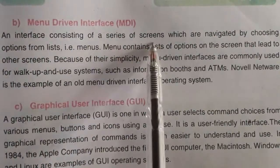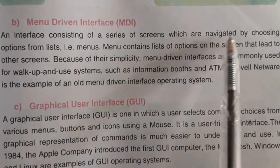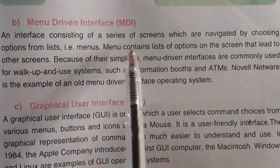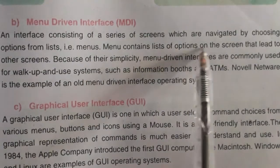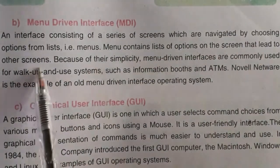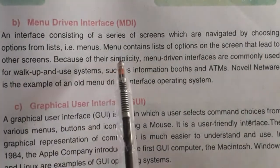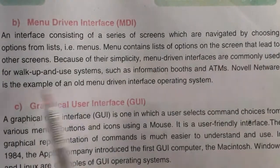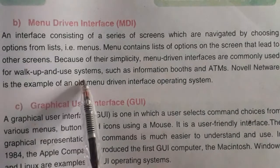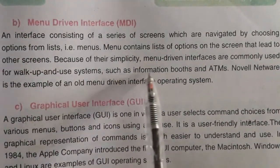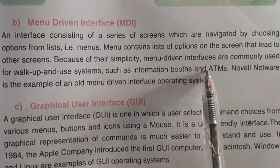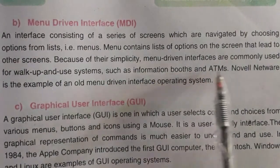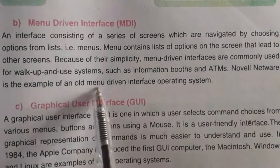The menu driven interface consists of a series of screens which are navigated by choosing options from a list. A menu contains a list of options on the screen that lead to other screens. That is why these are used in shopping malls, museums, ATM machines, and information booths. Novel NetWare is an example of an old menu driven interface operating system.